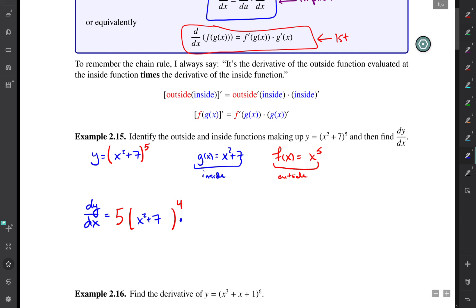And then you multiply by the derivative of the inside function. So that's (x² + 7) prime. So let me write this all over again. So this is 5 times something raised to the fourth. That was the derivative of the outside function.